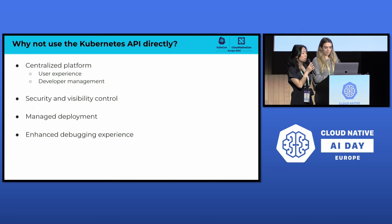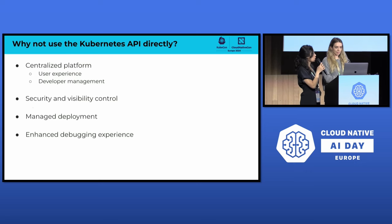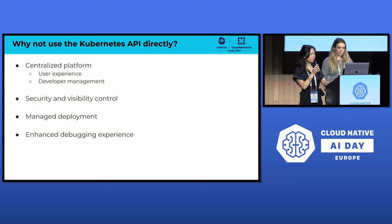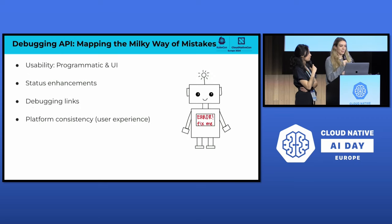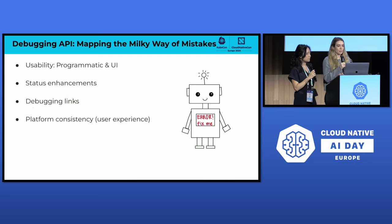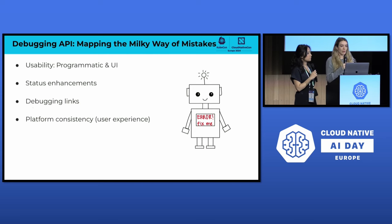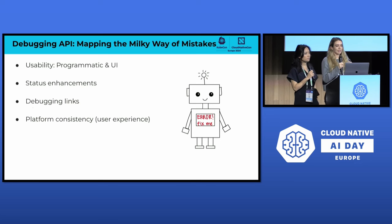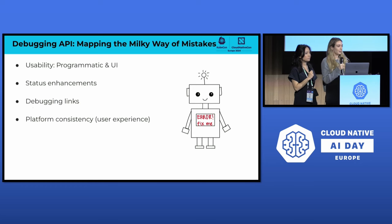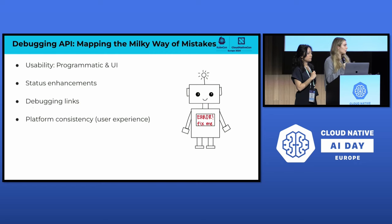We can also offer an enhanced debugging experience with links to metrics dashboards and aggregated service statuses. The debugging API provides better usability for our users — it's consistent both programmatically, like in workflows, and in the UI. We offer enhanced statuses and return consistent, easy-to-understand error messages. We've added customized debugging links for each resource to different dashboards and events for better observability. Overall, the debugging API adds a level of consistency to our platform and a better user experience.